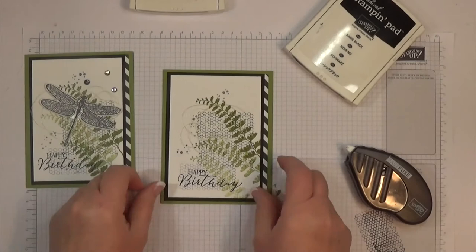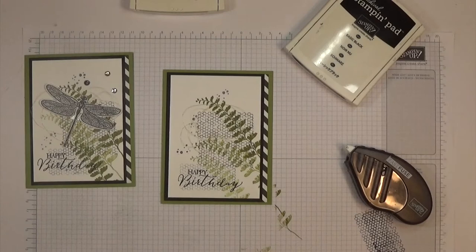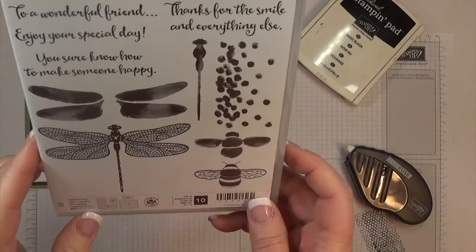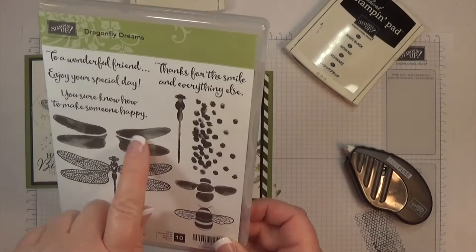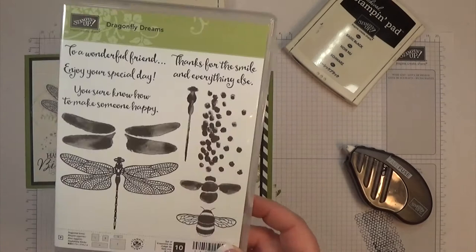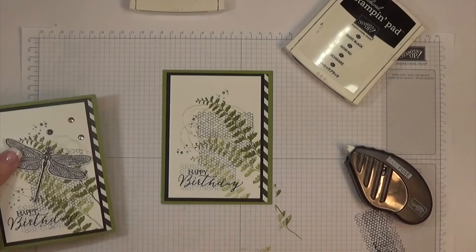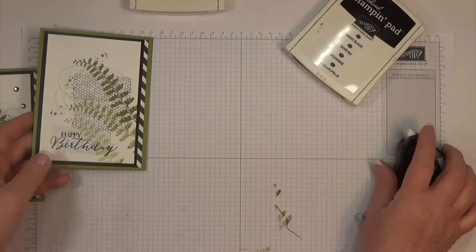Now the fun part is to stamp the dragonfly. I'm using one of the new stamp sets out of the occasions catalog that is live until the end of May. It's called Dragonfly Dreams, and you can get it in a bundle with the framelits so you can cut out all these different pieces. This bumblebee is really cute and it's got some really nice fonts and sayings, but we're going to use the dragonfly today.